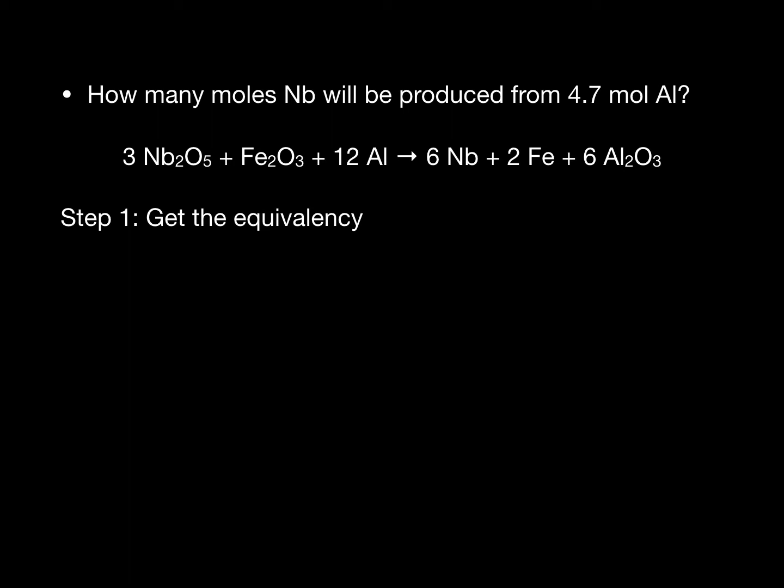The first step is to use the coefficients from the balanced chemical equation. Here you can see that 12 moles of aluminum produces 6 moles of niobium. So we're going to use that relationship as a conversion factor.